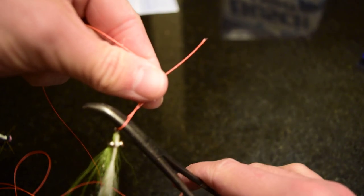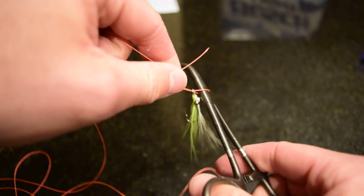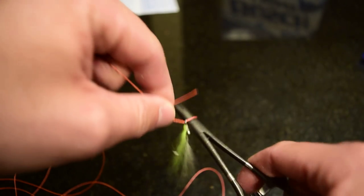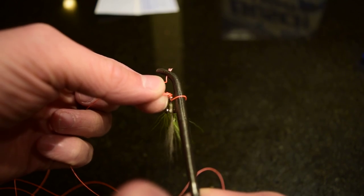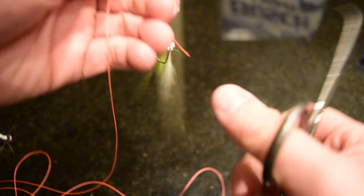I'm going to twist it around six times: one, two, three, four, five, six. I'm going to open my forceps and grab that tag and pull it back through.